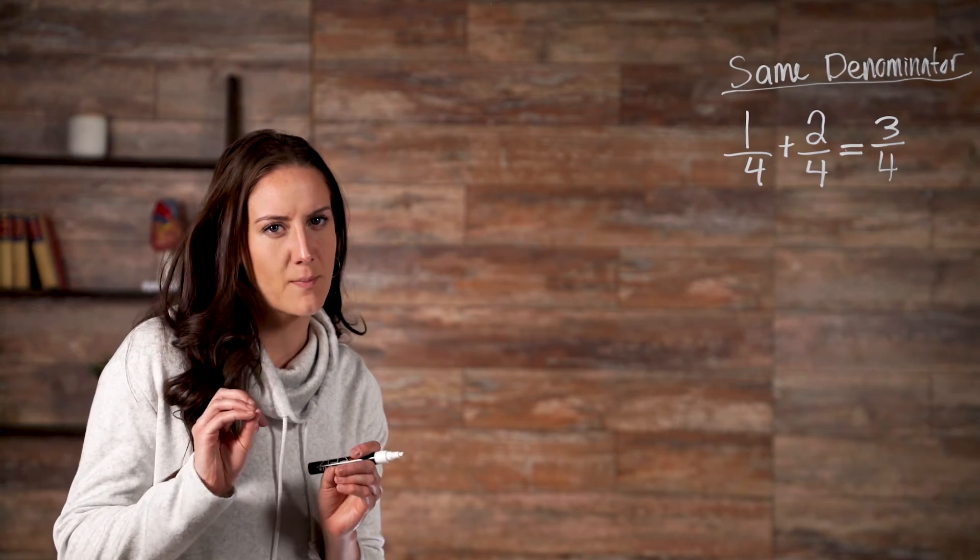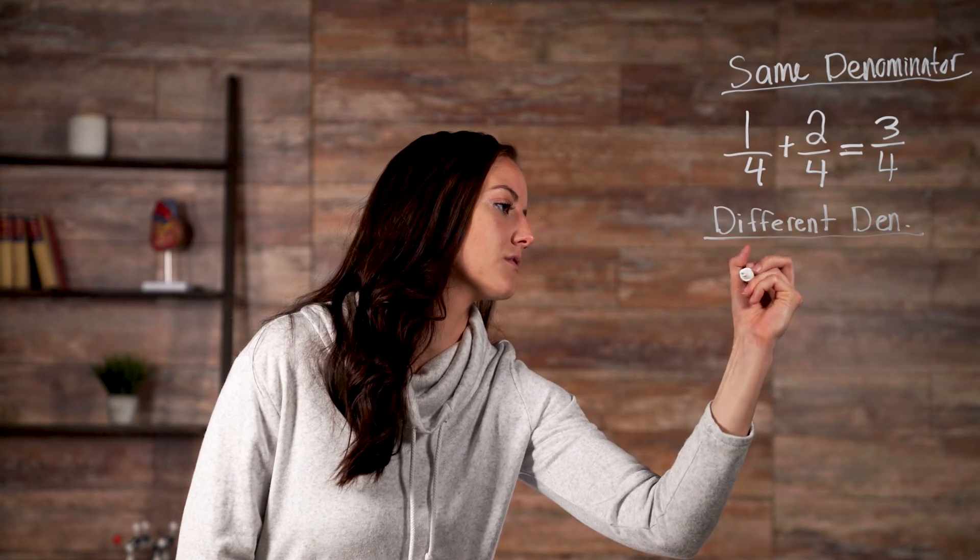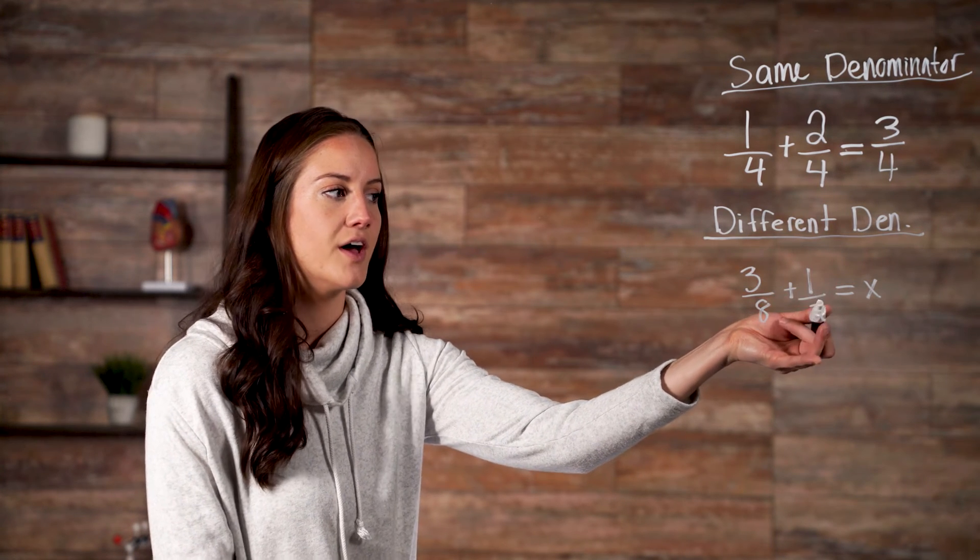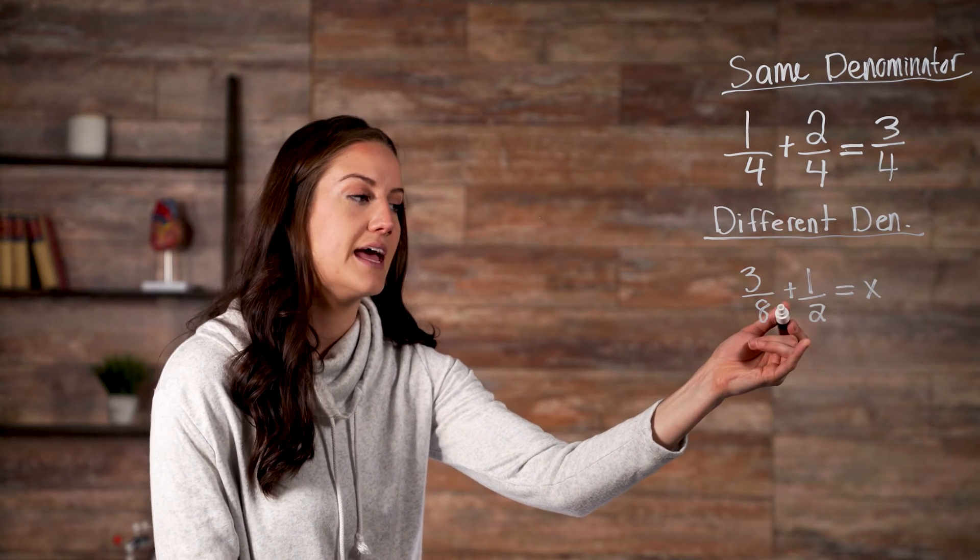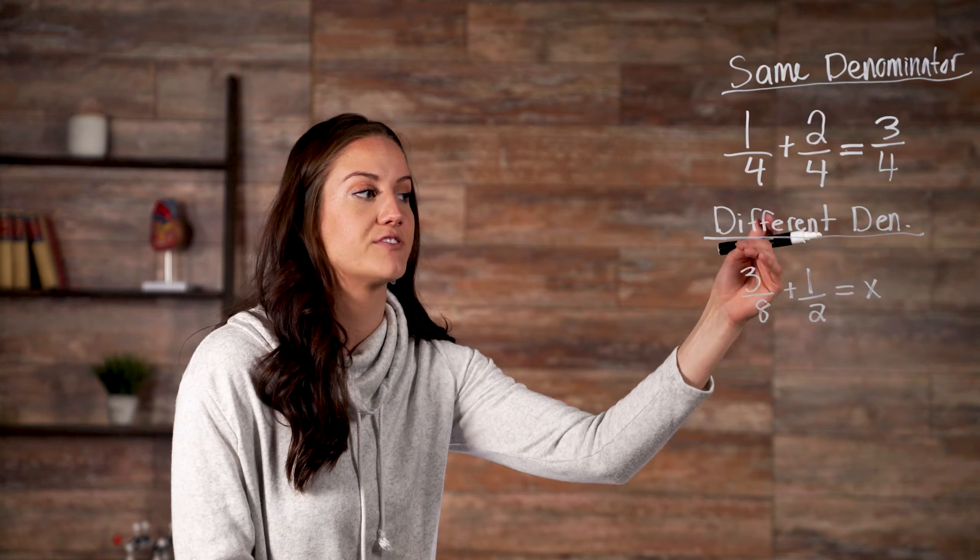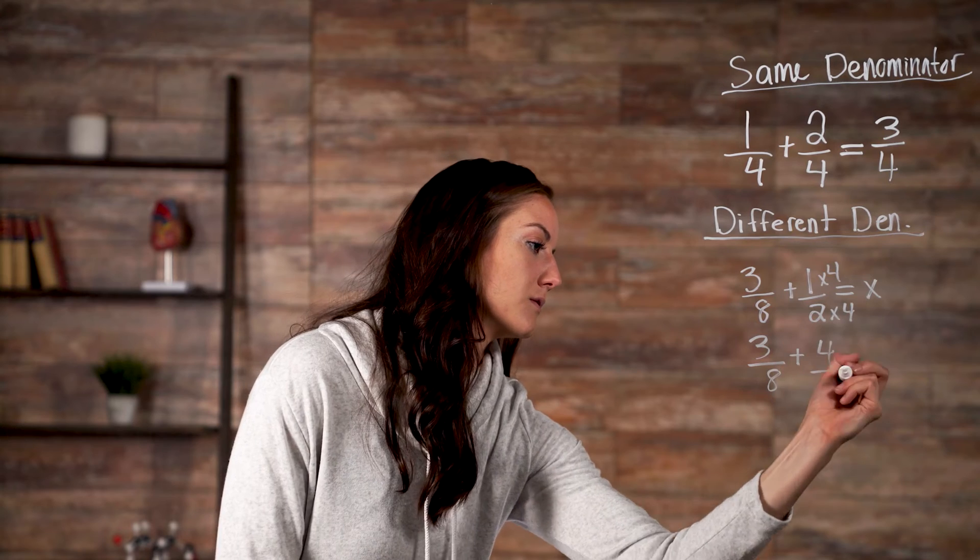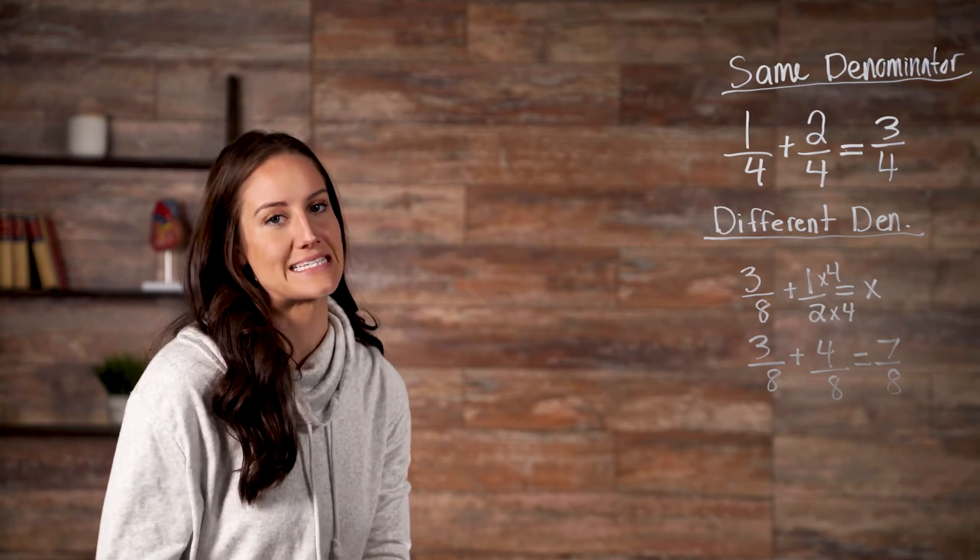But what happens if the denominators are different? Well, in that case, you have to convert the denominators to be the same. So, let's take a look at an example. You can't really simplify three-eighths into anything that would easily add with one-half. But we can do something with one-half that we could easily add with three-eighths. And that's multiplying two by four, which would give us eight. But whatever we do to our denominator, we also have to do to our numerator. So, our equation now becomes three-eighths plus four-eighths equals seven-eighths.